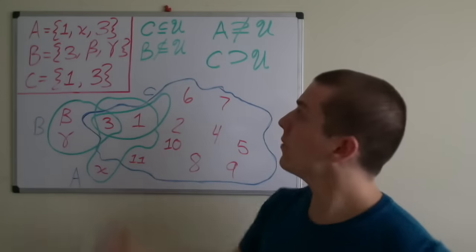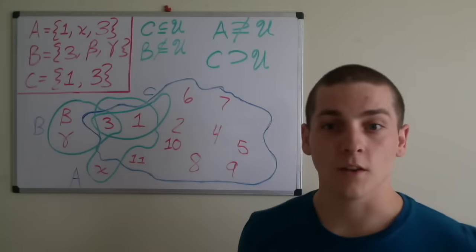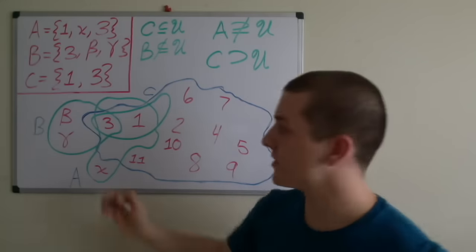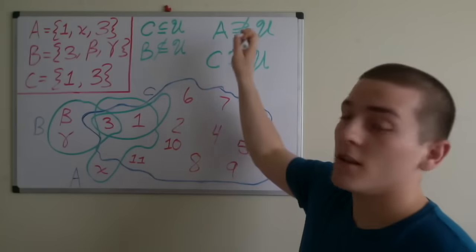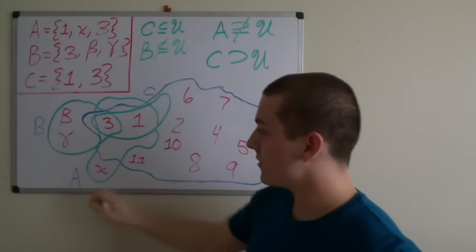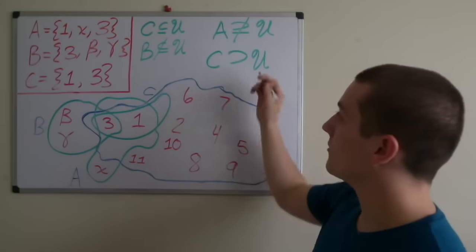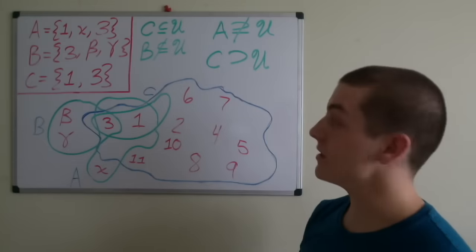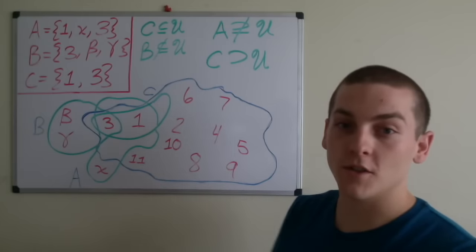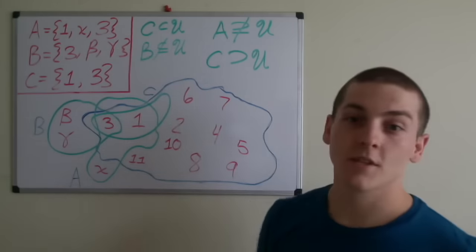Now what can be said about these sets? We can say that C is a subset of the universe because all elements of C are elements of the universe. Furthermore, the set B is not a subset of the universe because there are elements of B that are not within the universe. Also, the universe is not a superset of A because there are elements of A not contained by the universe. And finally, the universe is a proper superset of C because the universe contains all elements of C, and there are elements within the universe not within C. So C is a proper subset of the universe.